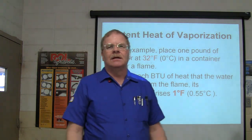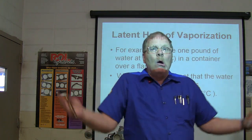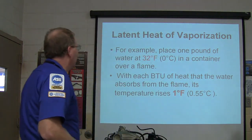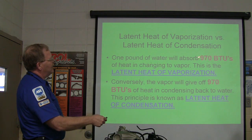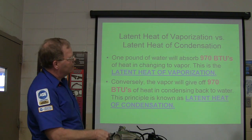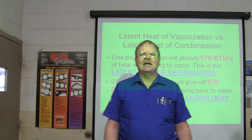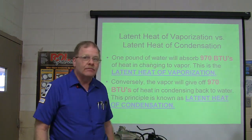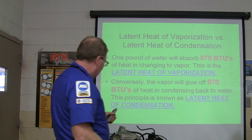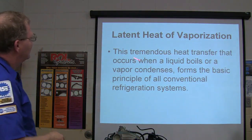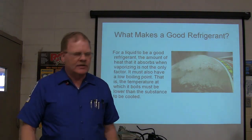If I ask you in the middle of the shop what a British thermal unit is, I don't want to hear you fumbling for the answer — you're supposed to remember this. One pound of water will absorb 970 BTUs of heat when changing to a vapor — that's the latent heat of vaporization. A pound of water is 16 ounces. This heat transfer principle — liquid boiling or condensing — forms the basic principle of all conventional refrigeration systems.